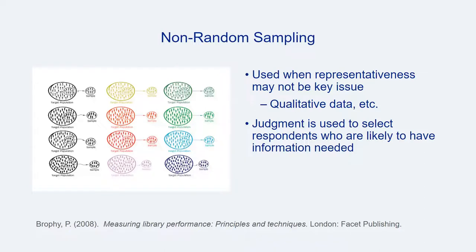Non-random sampling is often used when representativeness is not an issue — such cases can happen quite often in qualitative studies, but also in quantitative ones. Judgment is used to select respondents who are likely to be able to inform the assessment project due to expertise, experience, or other criteria.